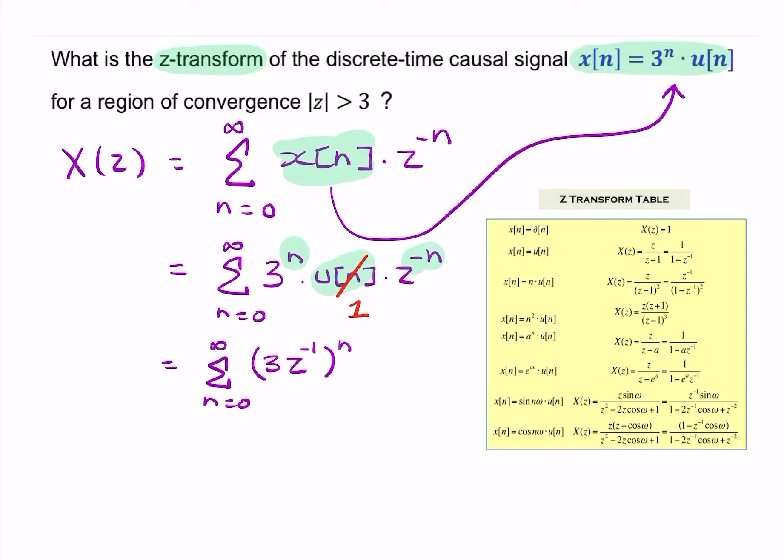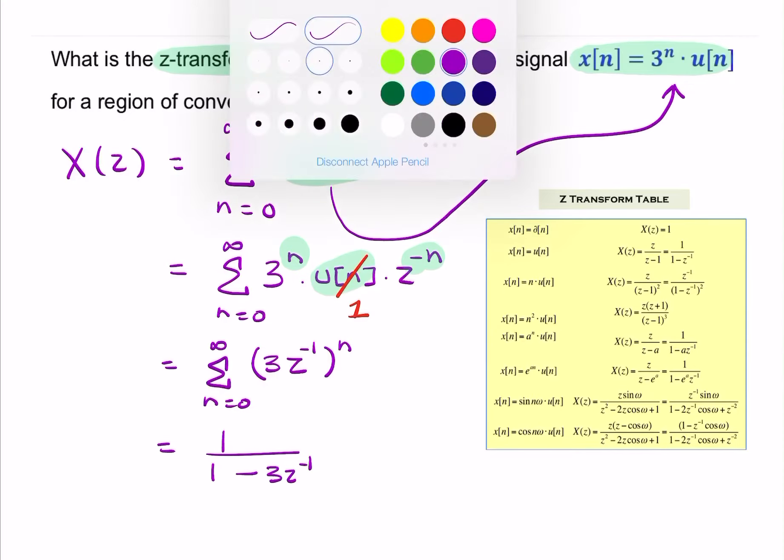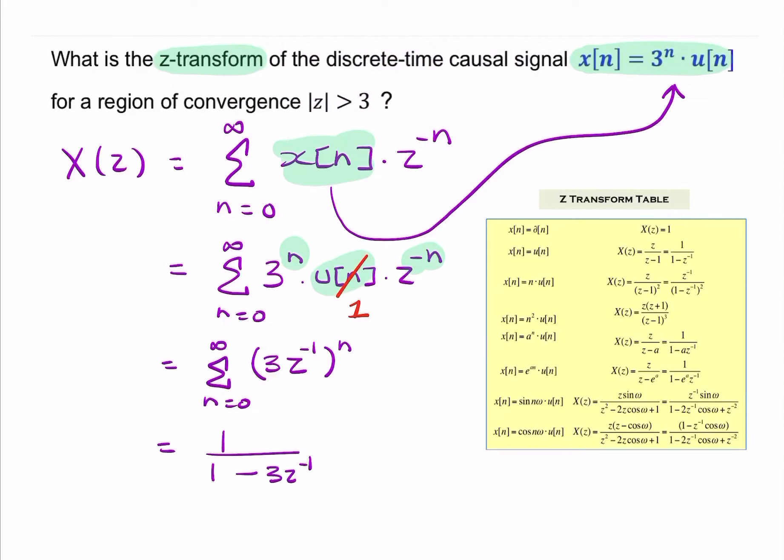So I can now use the power series. I can say that's equal to 1 over 1 minus 3z to the minus 1, provided that 3z to the minus 1 is less than 1. That means that z is greater than 3. So that's my region of convergence, and that's already given in the question, so I know that that condition is satisfied.